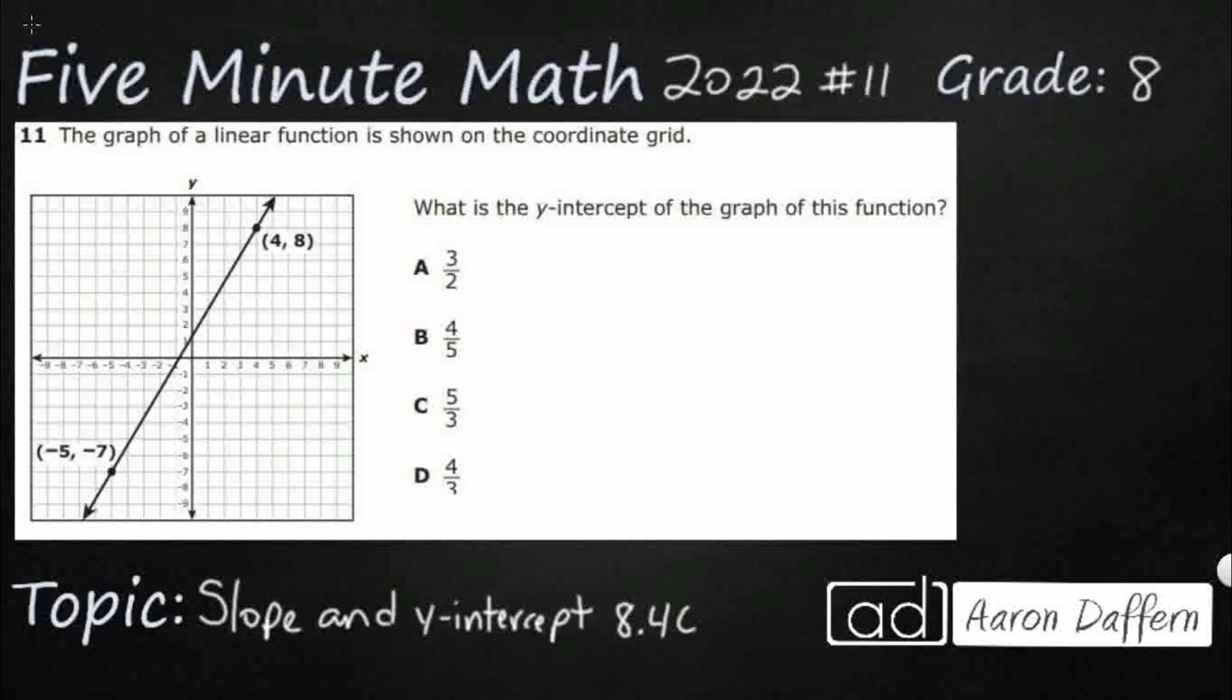So we've got the graph of a linear function here and we're looking for the y-intercept. The y-intercept is where the graph crosses the y-axis and it looks like it's between 1 and 2, so 1.5-ish. But here's my problem.